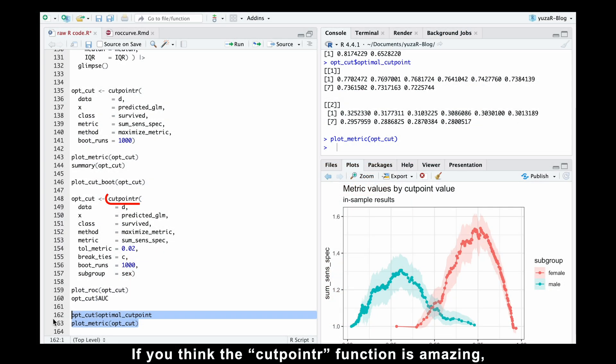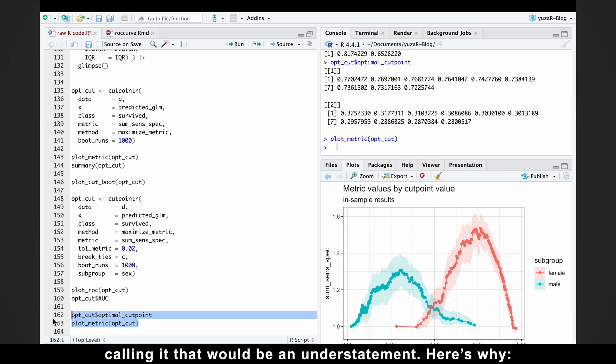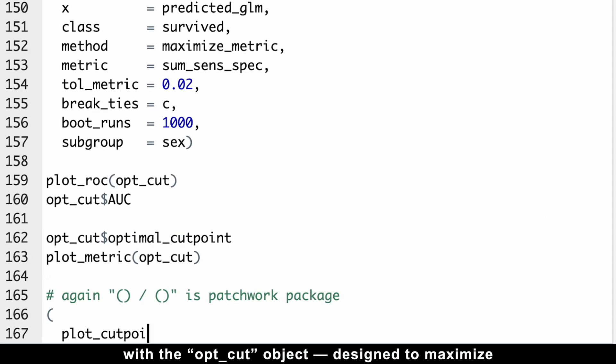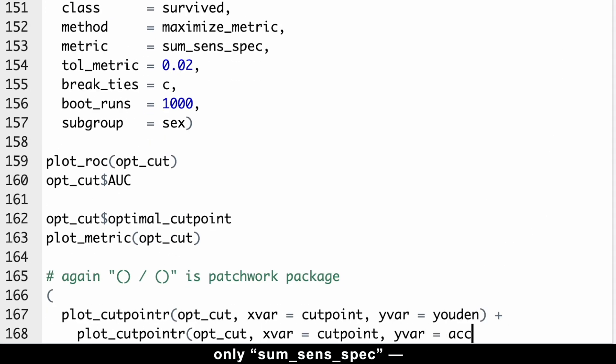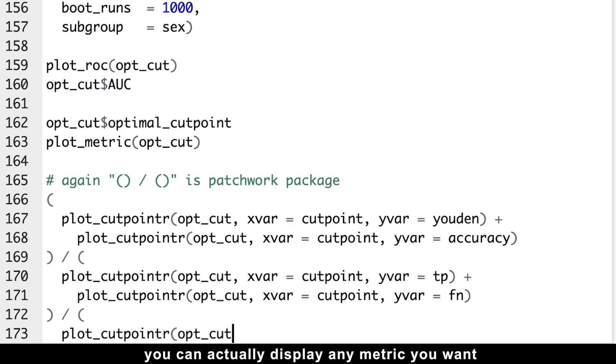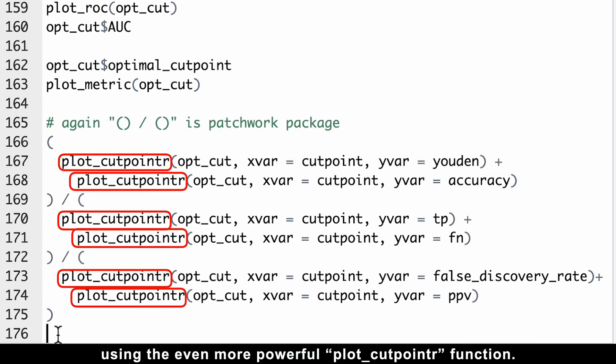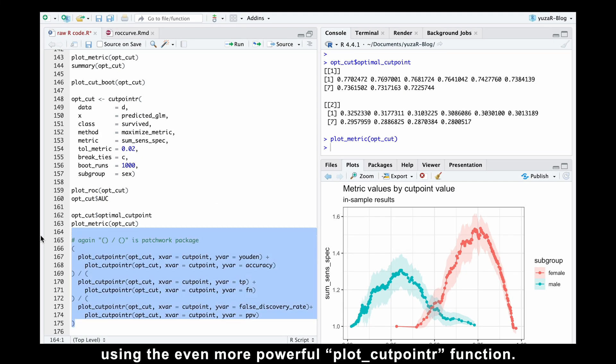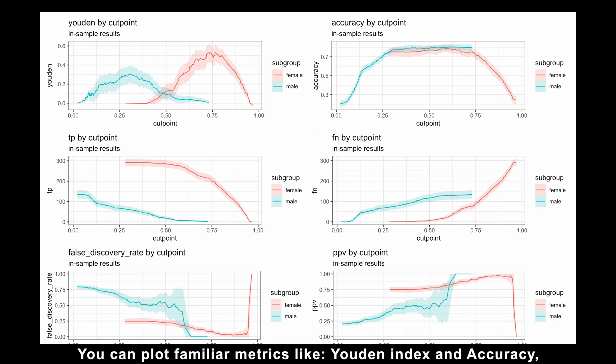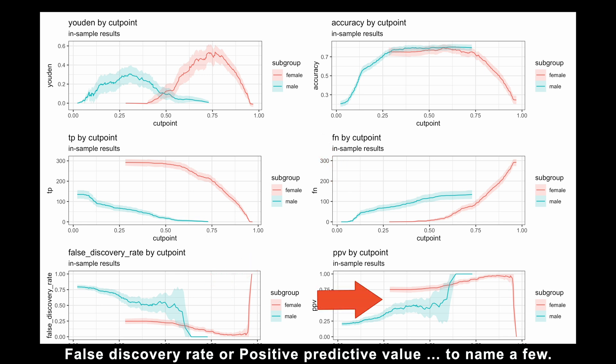If you think the cutpointr function is amazing, calling it that would be an understatement. And here's why. With the opt cut object, designed to maximize only sum of sensitivity and specificity, you can actually display any metric you want using the even more powerful plot cutpointr function. You can plot familiar metrics, like Youden's index and accuracy, or new ones we haven't touched yet, such as true positives and false negatives, false discovery rate or positive predictive value, to name a few.